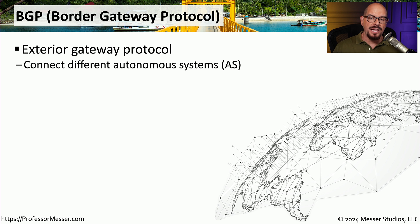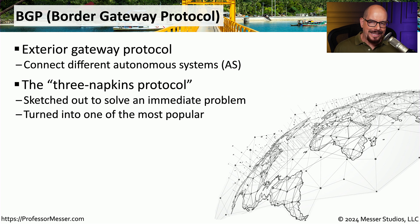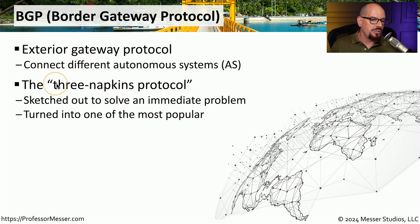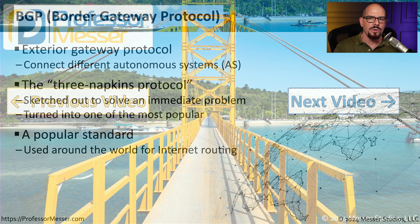If you need to route traffic outside of your autonomous system to other organizations, then you might want to use an external gateway protocol such as BGP — the Border Gateway Protocol — which is commonly used on wide area networks and internet connections. Connecting the internet together and dynamically updating routes across the entire internet is a daunting task, and this protocol was designed with that specific task in mind. Sometimes BGP is referred to as the 'three napkins protocol' because it was sketched out on napkins initially to solve this problem. If your organization has one or more connections to the internet and you want to dynamically route to those internet sites, you'll want to use a protocol such as BGP.